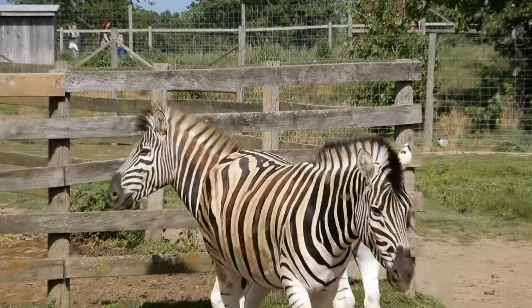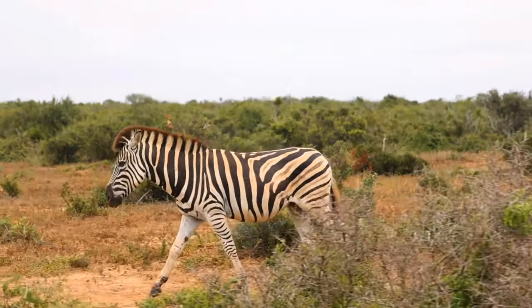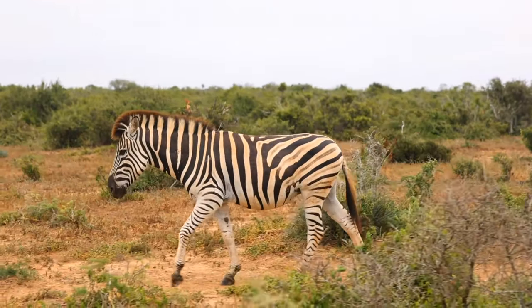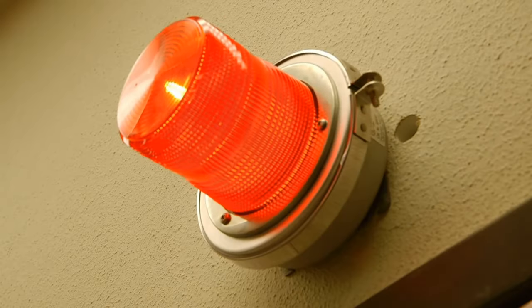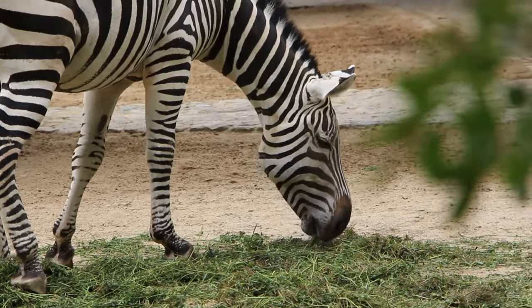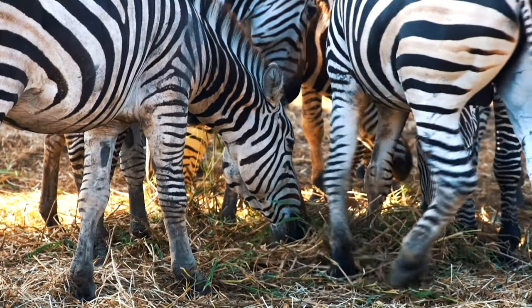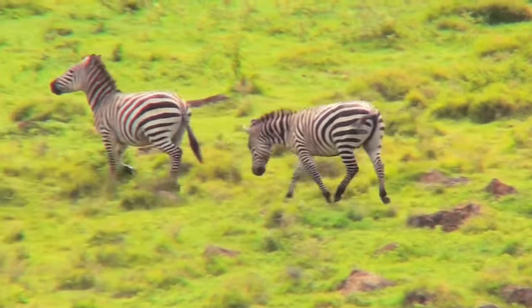Communication among zebras includes various vocalizations, body movements, and facial expressions. These forms of interaction are essential for maintaining social cohesion and alerting the group to potential threats. Zebras are herbivores with a diet primarily consisting of grasses, and their unique digestive system allows them to extract nutrients efficiently from the tough vegetation found in their habitats.